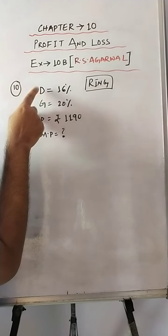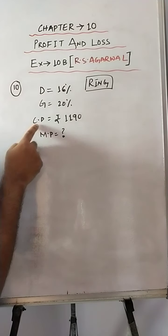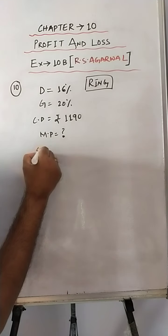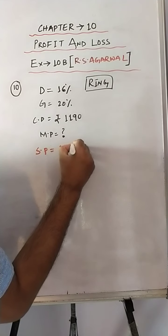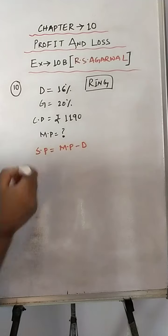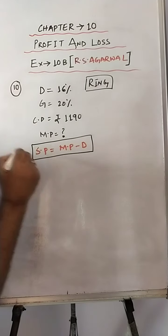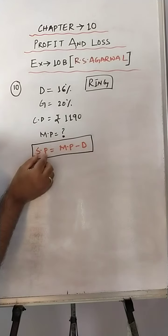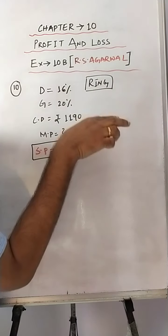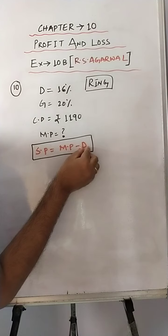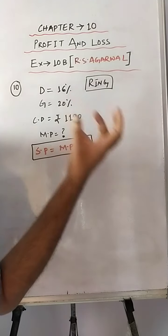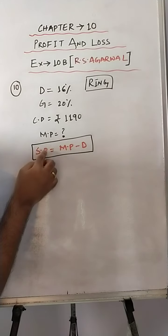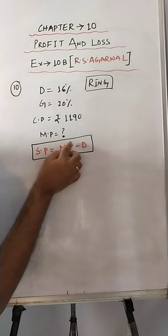Discount percent is given, gain percent is given, cost price is given, and we have to find the mark price. Whenever you have to find the mark price, always use the formula: SP equals MP minus discount. Now we have to see which values are given and which we need to find. Mark price we need to find, so we need SP and discount. Discount percent is given, not in rupee form — we need to find discount as a value. We also need SP.